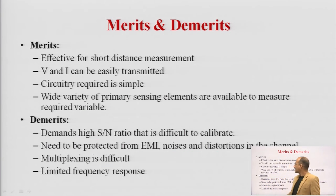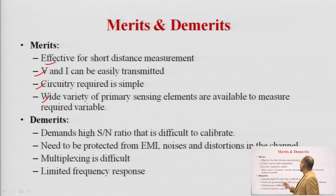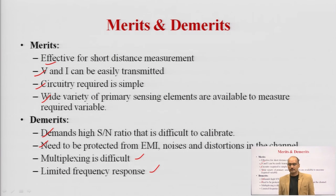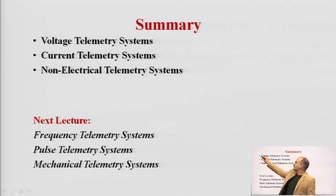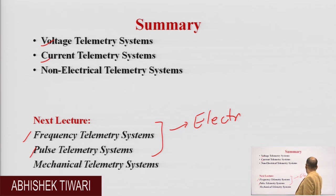The merits and demerits of voltage and current telemetry systems are: both systems are effective for short distances only; voltage and current signals can be easily transmitted; circuitry required is simple; and a wide variety of primary sensing elements can be used. However, demerits include: they demand a high signal-to-noise ratio (SNR); they need to be protected from electromagnetic interference (EMI) and other noise; multiplexing is not available or very difficult; and there is limited frequency response. In the next part, we will study frequency telemetry systems and pulse telemetry systems, both of which also belong to the electrical telemetry system.